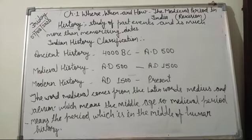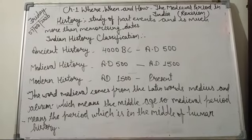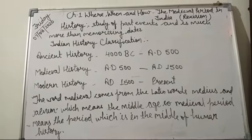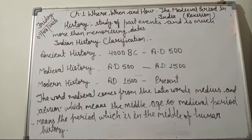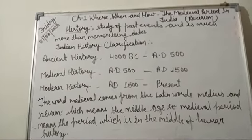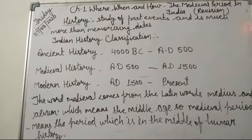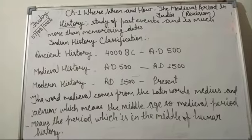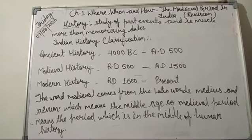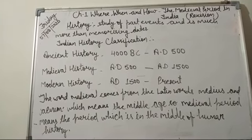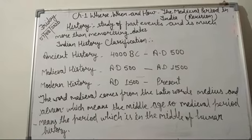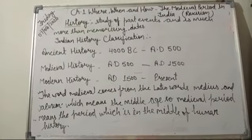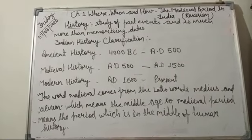The word 'medieval' comes from the Latin words 'medias' and 'aevum', which means 'the middle age'. Therefore, the medieval period means the period which is in the middle of human history. The medieval period in India is divided into two parts: the early medieval period and the later medieval period. Different dynasties lived in India from the 11th to the 18th centuries CE — these were Turkish, Afghan, Persian and Mongol.